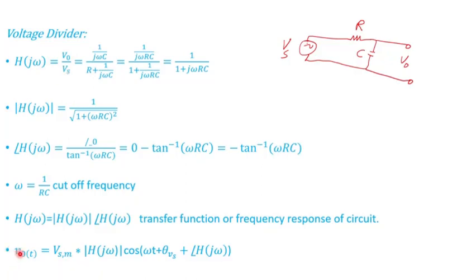Then, to go back to the time domain, it's just the magnitude or the peak of the input signal times the magnitude of the transfer function. Since we started with the sinusoidal signal, that's why we have the cosine, then you just sum up all the angles here.